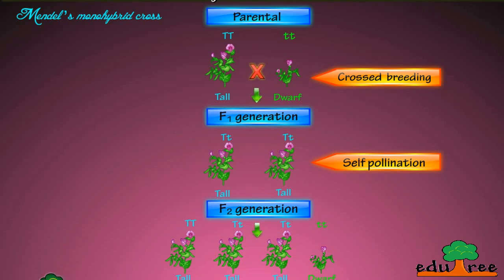Mendel observed variations in the characteristics of the garden pea plant, which he had cultivated in his monastery garden. Mendel was curious to find out the results of crossing pea plants with variations in traits. Let's study some of the visible contrasting characters that Mendel observed in the garden pea plants.